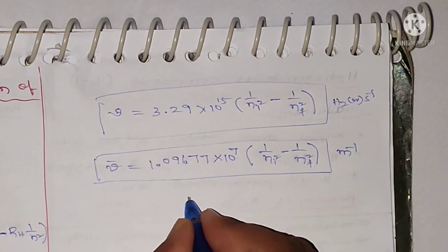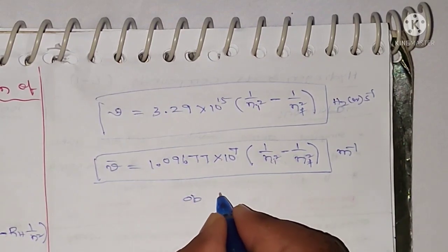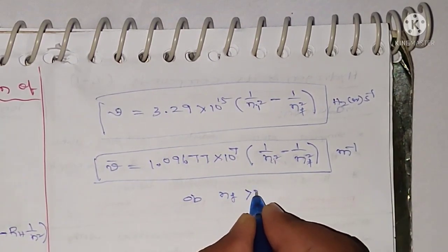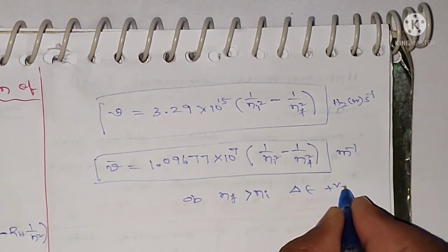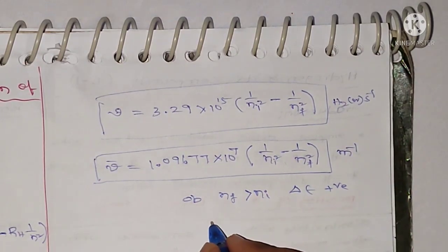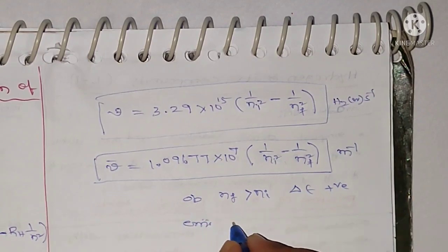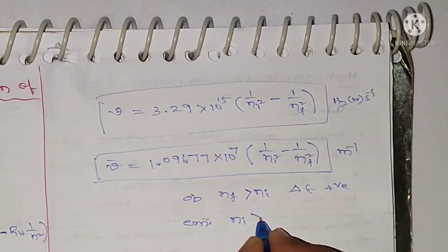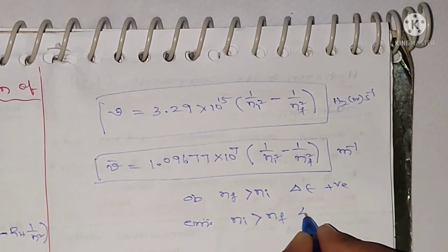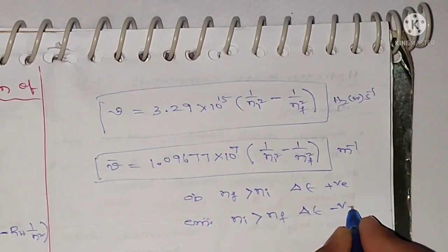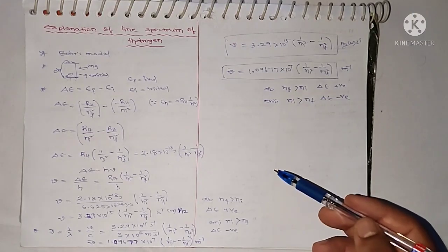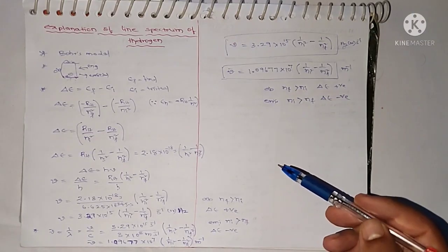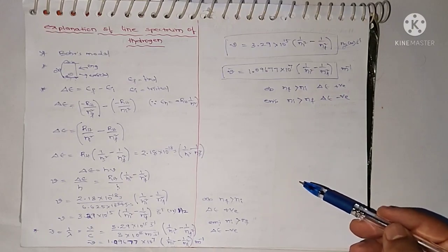In the case of absorption, nf is greater than nᵢ and ΔE will be positive. In the case of emission, nᵢ is greater than nf and ΔE will be negative. This is the explanation of the line spectrum of hydrogen using Bohr's model.